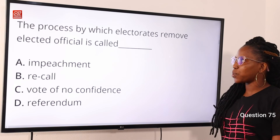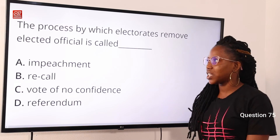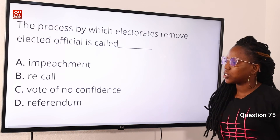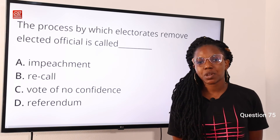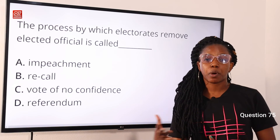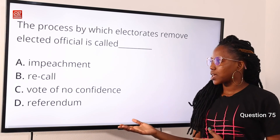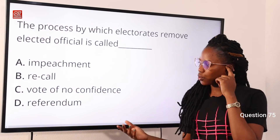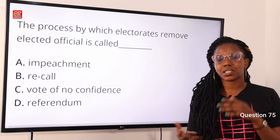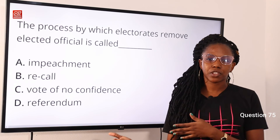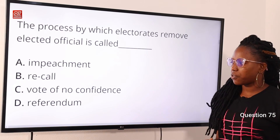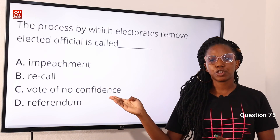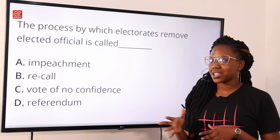Question 75: the process by which the electorate removes an elected official is called — A, impeachment; B, recall; C, vote of no confidence; D, referendum. Impeachment means to initiate charges against a public official for misconduct. Recall is to remove an official by vote. A vote of no confidence is a vote about whether a person is no longer fit for a position. A referendum is a vote by the electorate. From these explanations, recall is the answer for removing an official by vote. Option B is the correct answer.